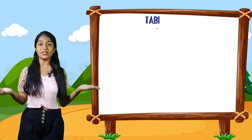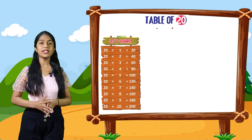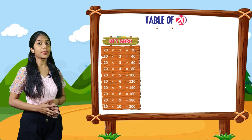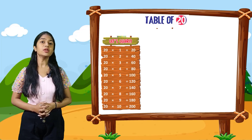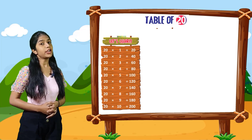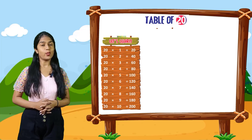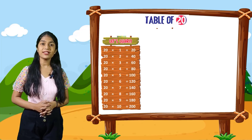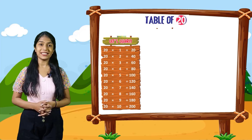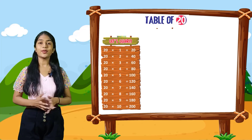So now let's do the table of 20. Let's learn. 20 into 1 is equal to 20. 20 into 2 is equal to 40. 20 into 3 is equal to 60. 20 into 4 is equal to 80. 20 into 5 is equal to 100. 20 into 6 is equal to 120. 20 into 7 is equal to 140. 20 into 8 is equal to 160. 20 into 9 is equal to 180. 20 into 10 is equal to 200.